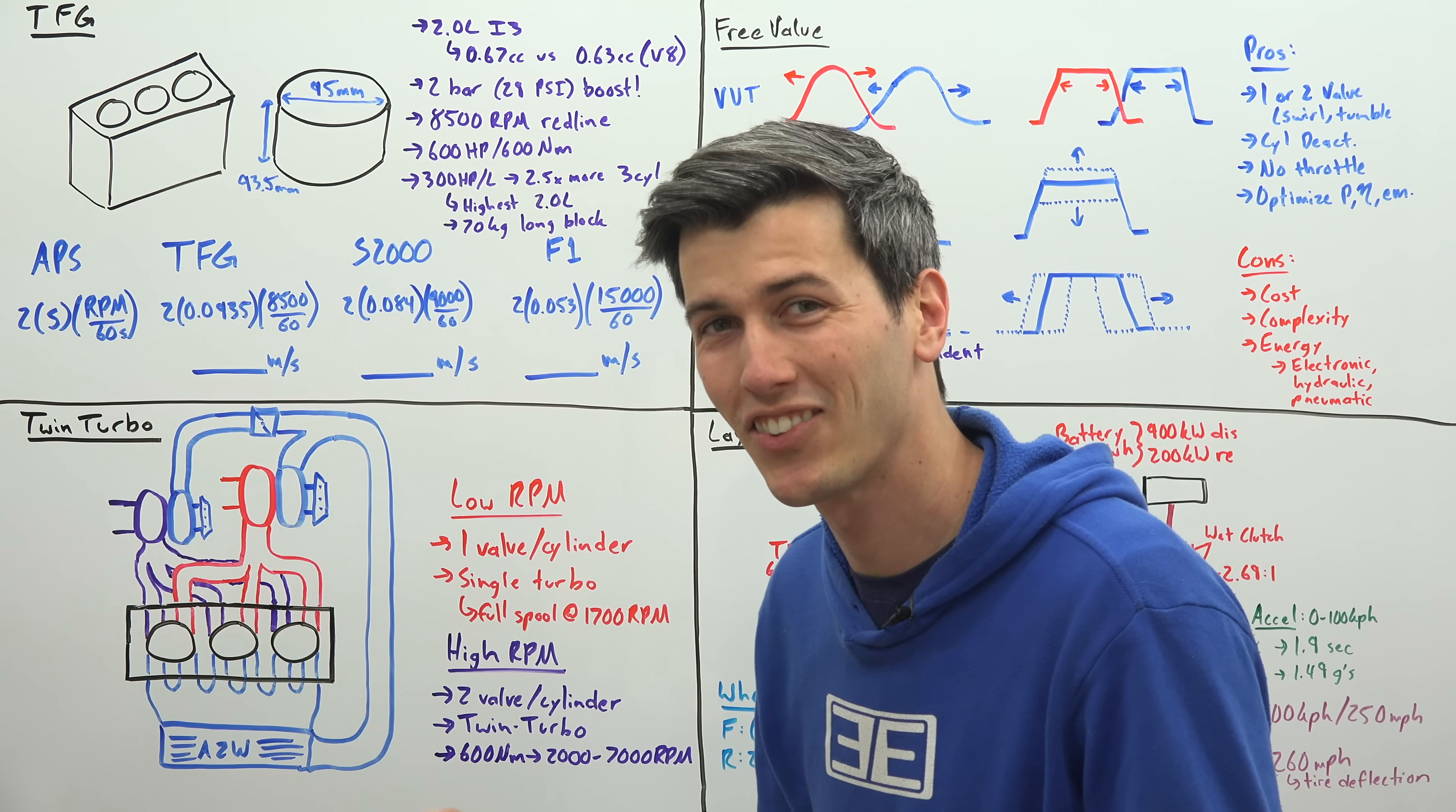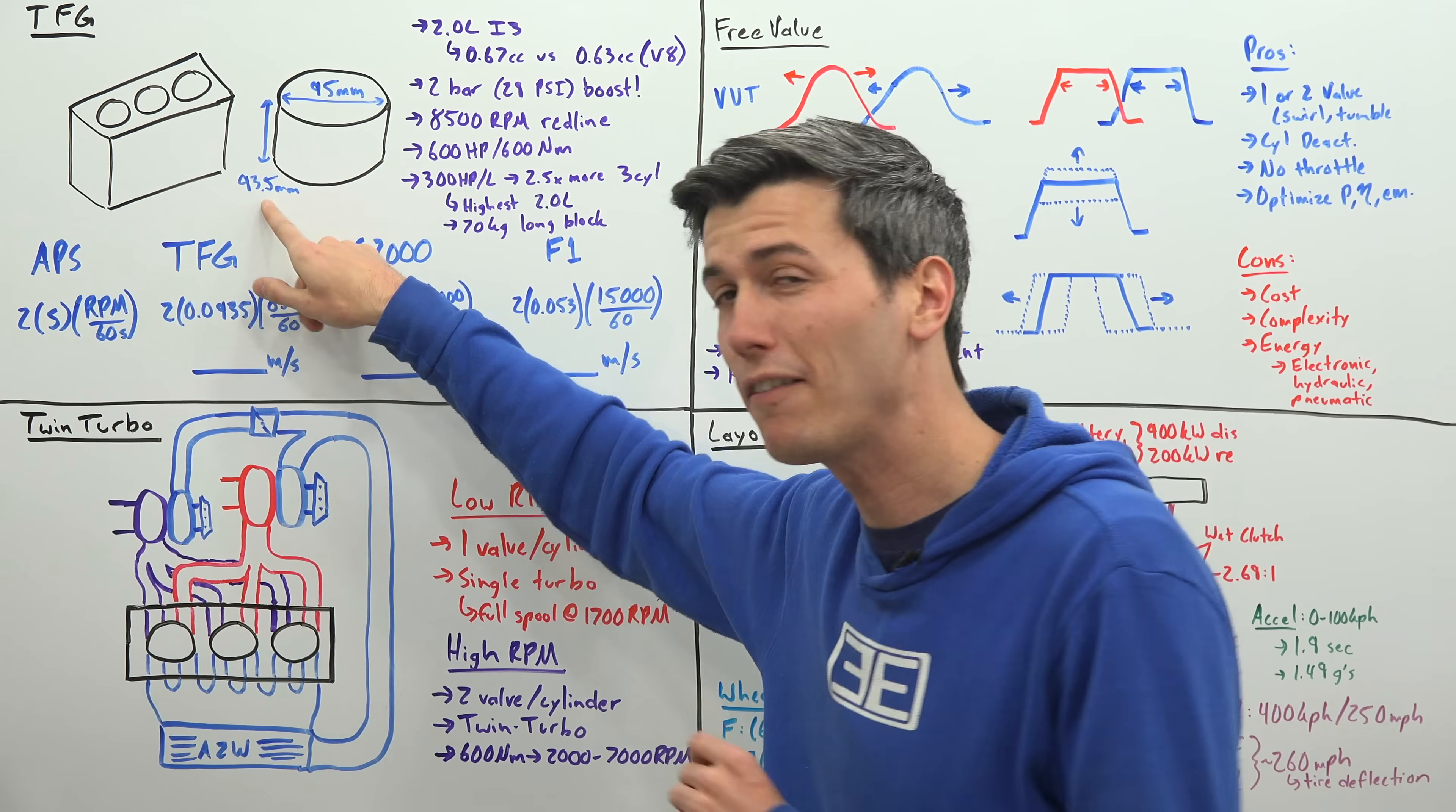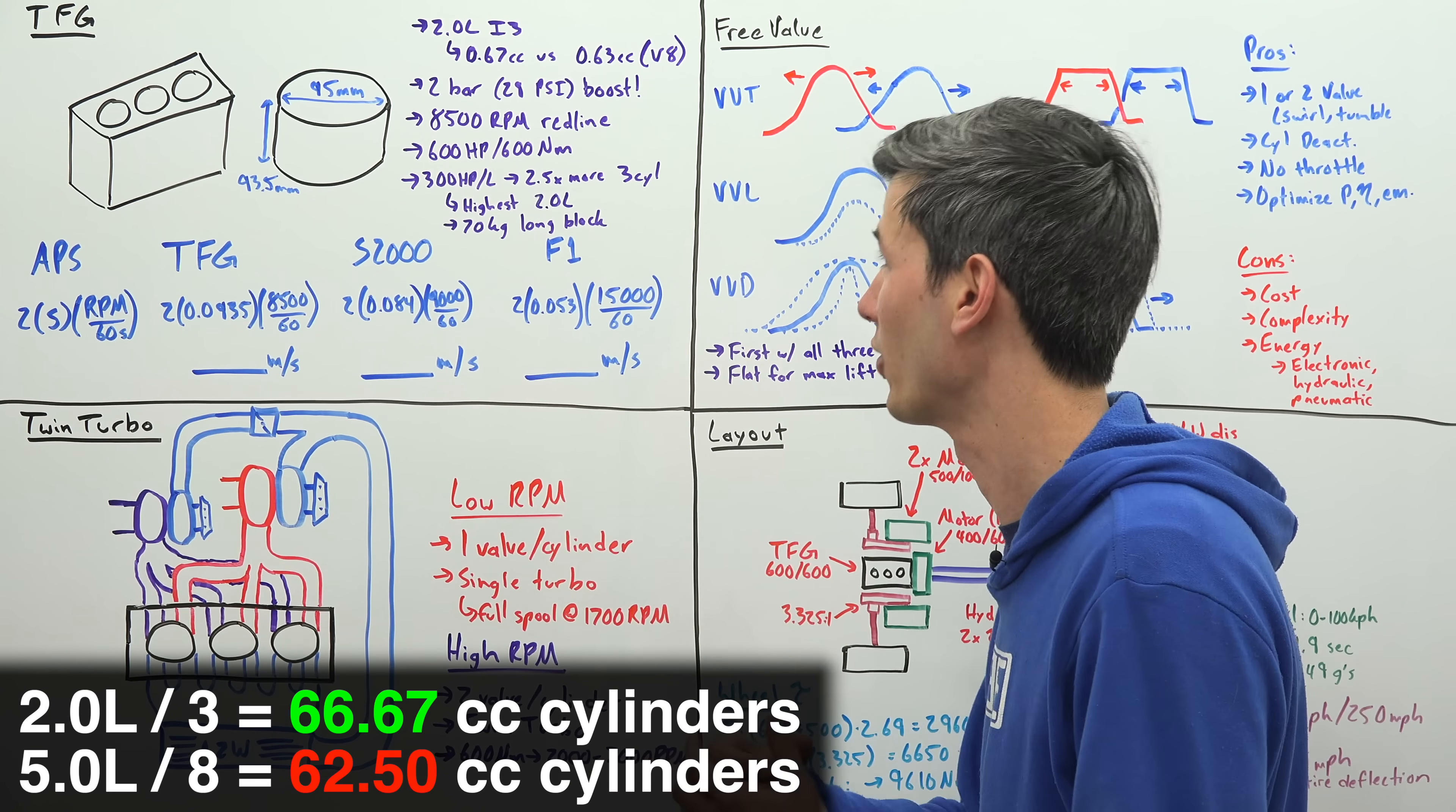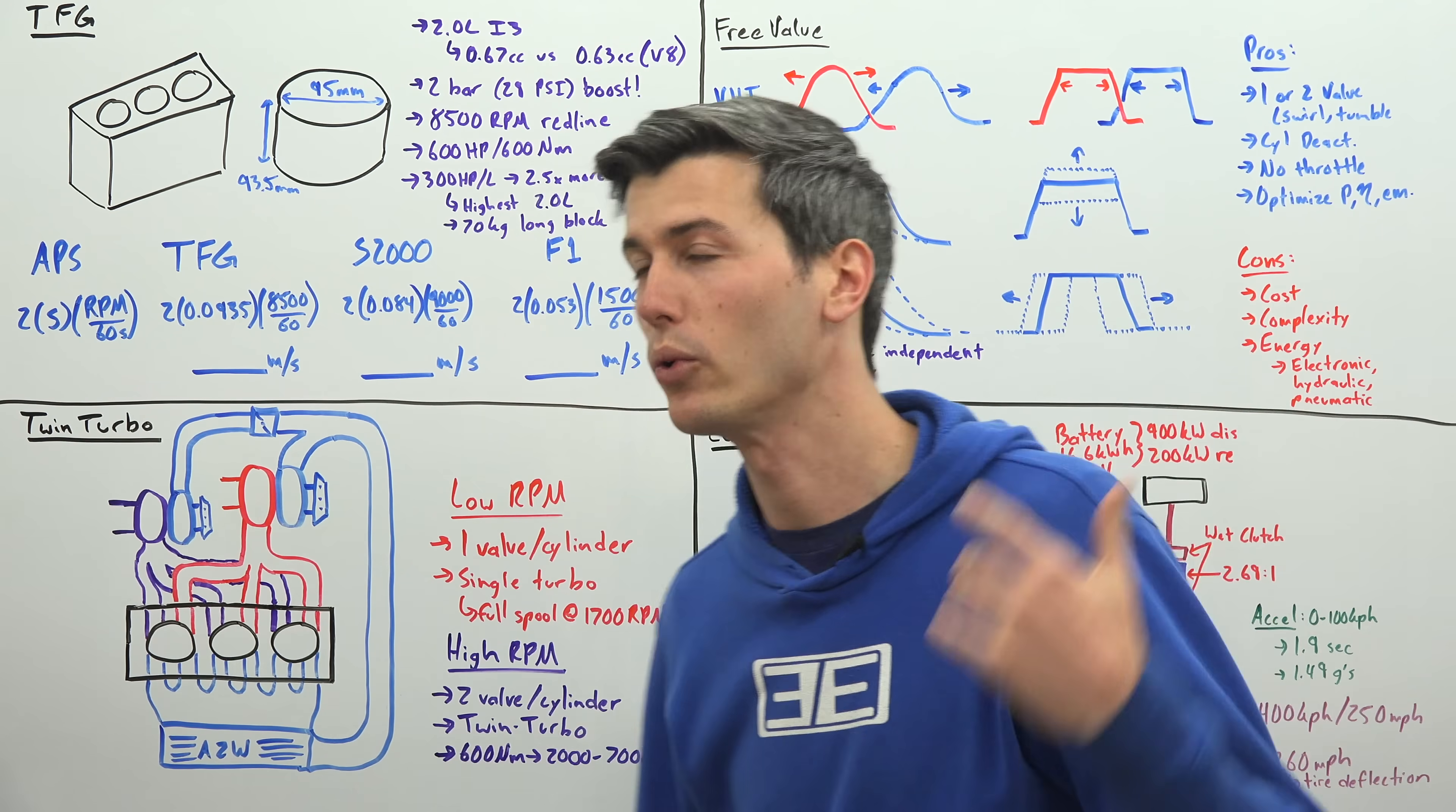Now let's talk specs. This is a 2-liter inline three-cylinder engine, so the engine isn't very big and there aren't many cylinders. However, with a bore of 95 millimeters and a stroke of 93.5 millimeters, the cylinders themselves are actually quite large. In fact, if you're to compare it to Koenigsegg's 5-liter V8, these cylinders are actually larger. And so how does this thing make so much power, 600 horsepower, 600 newton meters? Well, some engines will make a lot of power through revving very high. Some engines will make a lot of power through a lot of boost. This is doing both.